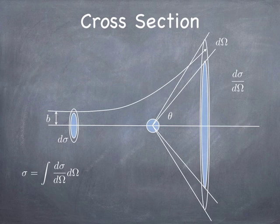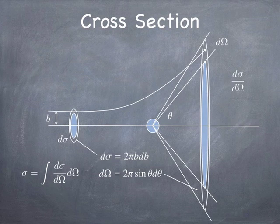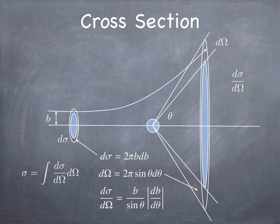d-omega is a differential solid angle. Now, here's the thing. If you look at the geometry, d-sigma, if I integrate over all possible values of phi, d-sigma is 2 pi b db. It's the circumference of the circle times the thickness of the little band. And d-omega, on the other hand, is 2 pi sine theta d-theta. That's the definition. Well, that's one way to look at the definition of a solid angle. And you can see, if you simply take the ratio of those two things,